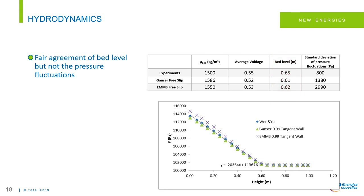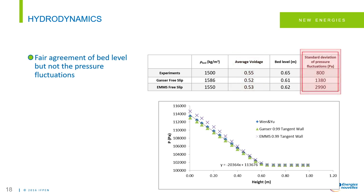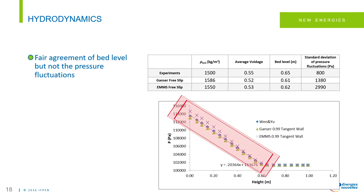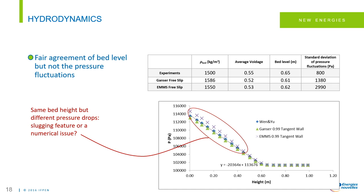Taking those two drag models and wall conditions, we found the bed level matched the experiments and the voidage was reasonable. However, the standard deviation of pressure fluctuations still showed a large difference between experiments and CFD. I want to highlight again this pressure profile: with different drag laws we have almost the same bed height but different pressure drops. Whether this is a physical slugging feature or a numerical issue is something we need to investigate further to improve Barracuda for Group B particles.